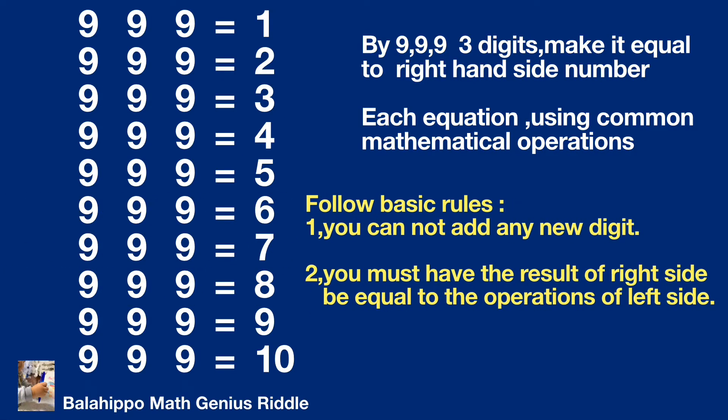Basically we have two rules. First, you cannot add any new digits on both sides. For example, adding five on the left-hand side is not allowed.